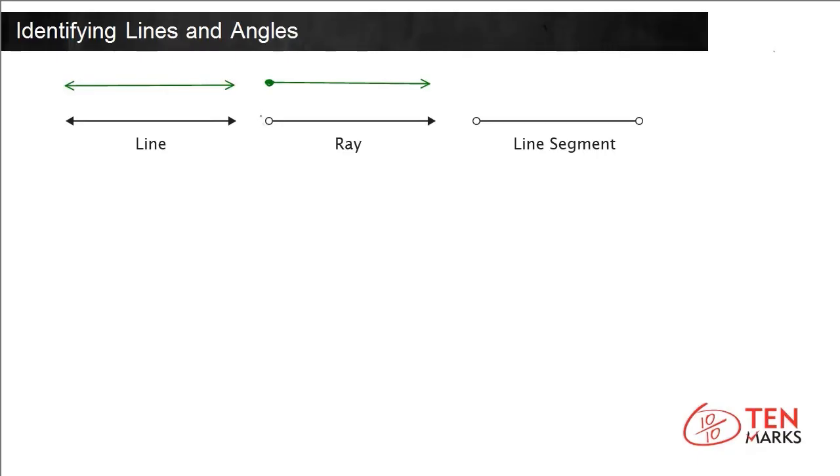A line segment is a part of a line with both end points fixed. It has a fixed length. Here is a line with end points on either side, which makes it a line segment.